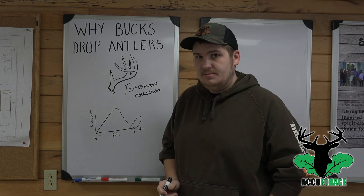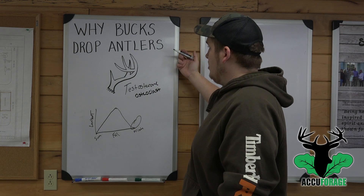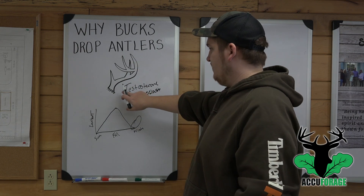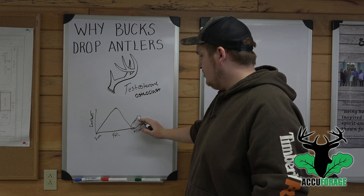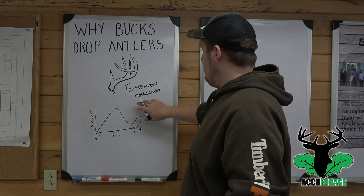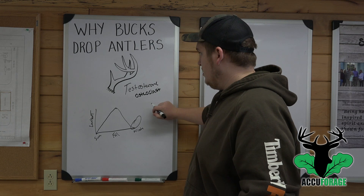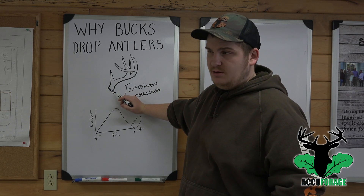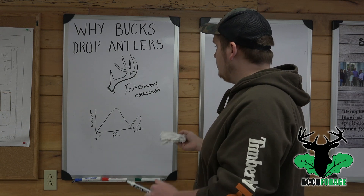That bone cell, osteoclast, when released, travels toward the pedicle and the antler attachment and demineralizes that connection — and that is what causes bucks to drop their antlers. When testosterone levels are at their lowest, osteoclast is released, which demineralizes the attachment at the pedicle and the antler.